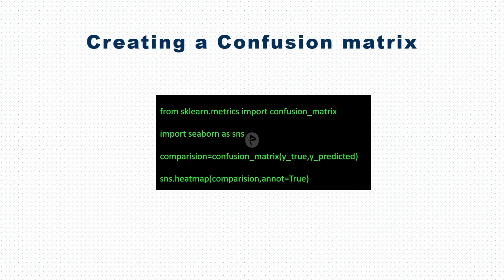So how to create a confusion matrix? From sklearn.metrics you have to import confusion_matrix. To visualize it we can use seaborn. We have to create a variable and then call the confusion_matrix and pass two arguments: true value and predicted value. With the help of seaborn heatmap we can visualize it. We have to pass the variable and mention annot=True to actually visualize the number of cases in the confusion matrix.